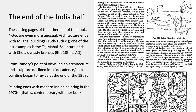Even though it was published in 1982, the book doesn't quite reach that moment — it stops a bit before, so it doesn't include postmodernism. The end of the India half is also unusual: architecture ends with Mughal buildings from the 18th century, one of the last examples being the Taj Mahal. Sculpture ends with Chola dynasty bronzes from the 13th century. That's because from Tamuri's point of view, Indian architecture and sculpture declined into what she calls decadence, but painting began to revive at the end of the 19th century, and the painting examples go up to the 1970s — nearly contemporary with the book.